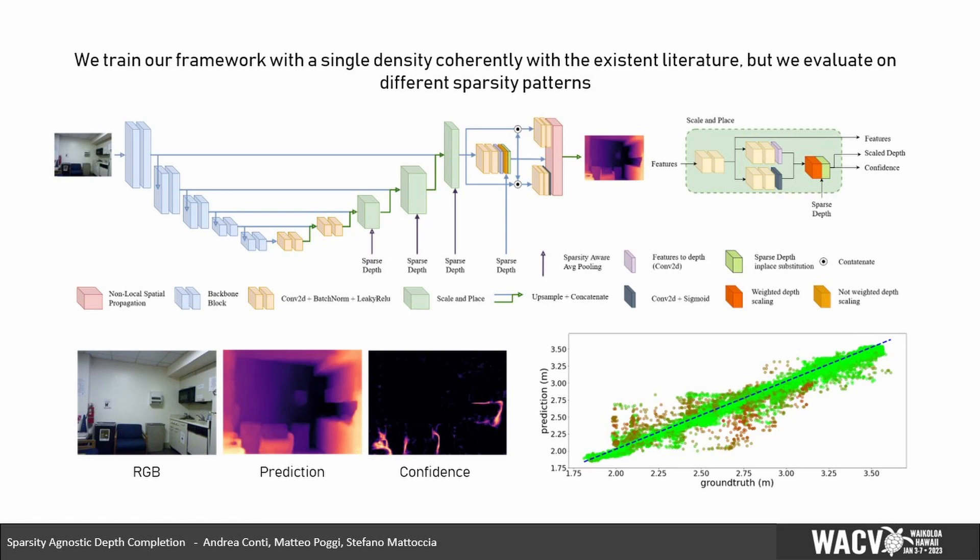We propose a novel framework designed to be robust to any sparsity distribution and density by structure, trained in a straightforward way with a fixed pattern or density as previous depth completion proposals. We don't feed the network directly with the sparse depth map. Instead, we iteratively merge those points with multiple depth maps predicted by the network at multiple scales.